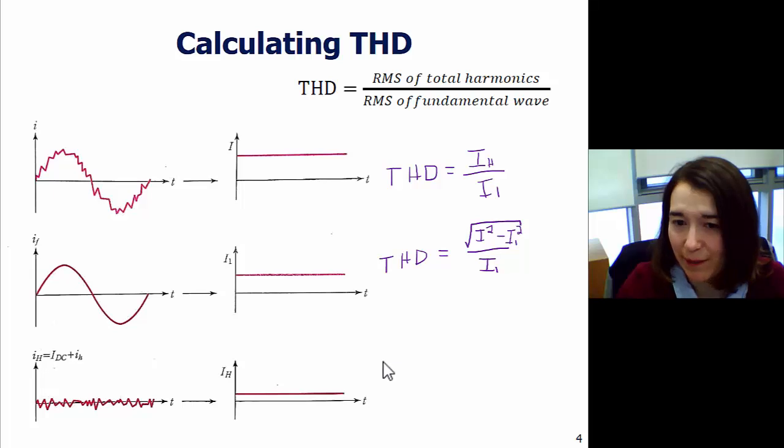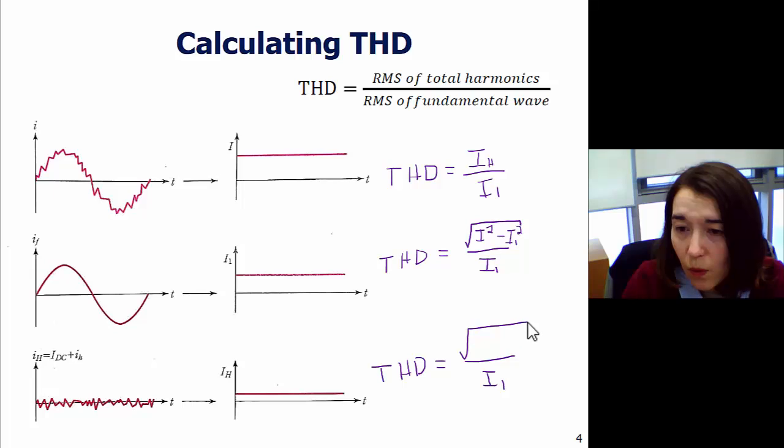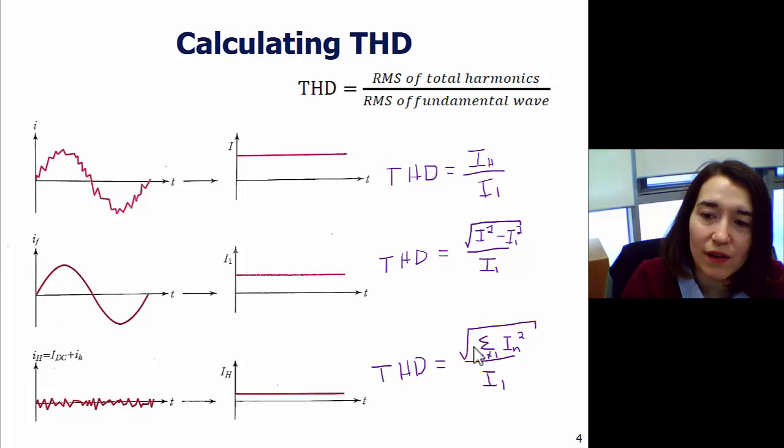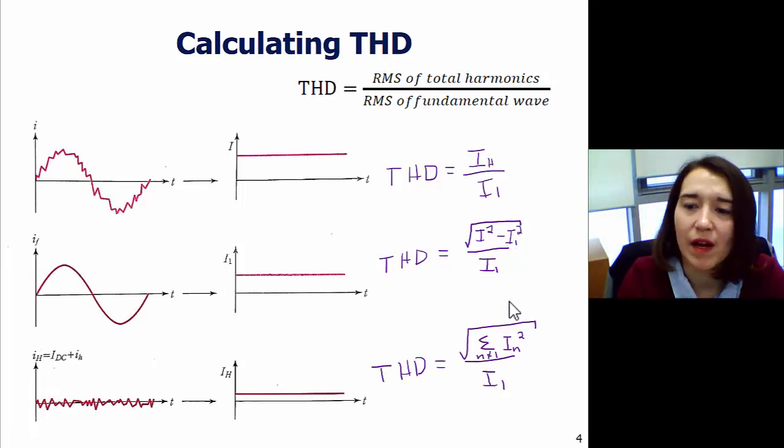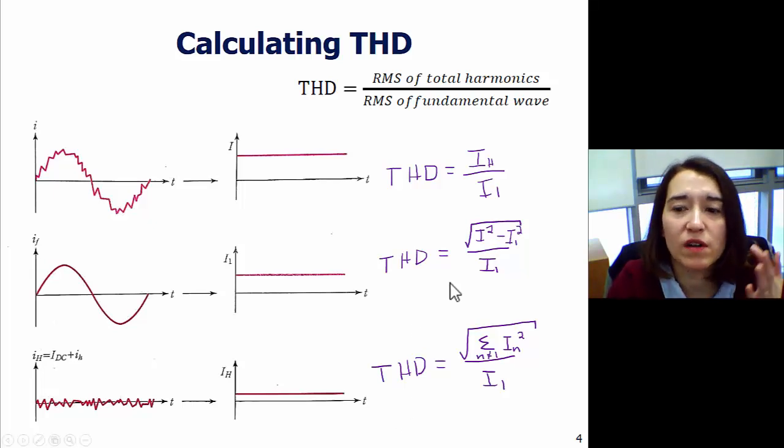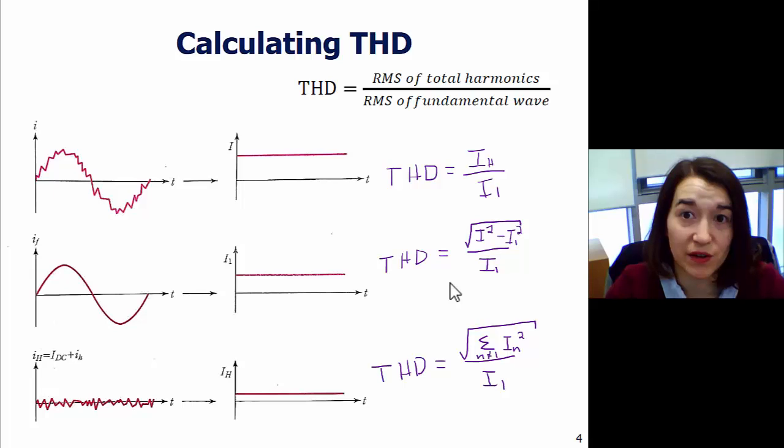Another way you can think about it is if you have all of the frequencies, the harmonics is all of the frequencies except for the fundamental. So you can also think about it like this: THD equals the sum of all the non-fundamental frequencies, IN squared. Summing those all together, taking out just I1, and you get the rest. These are different ways to define THD depending on which values you have available based on your calculation.